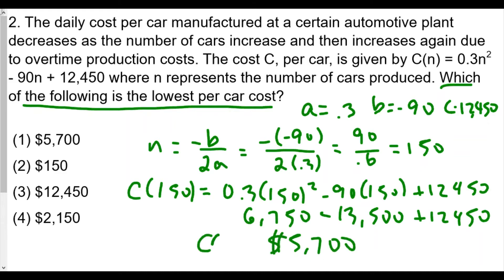We're going to get $5,700 as our cost C(150), and this will be the lowest cost. How do we know it's the lowest cost? This is a parabola facing upwards, so the lowest cost occurs at the vertex. My answer for number two is choice 1: $5,700.